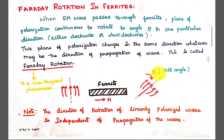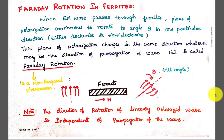This is purely non-reciprocal. The direction of rotation of the linearly polarized wave is independent of the direction of propagation. The plane of polarization changes in the same direction whatever may be the direction of wave propagation — either from port 1 to port 2 (forward direction) or from port 2 to port 1 (backward direction). Irrespective of the direction, the angle of rotation is the same. This is considered Faraday's rotation.